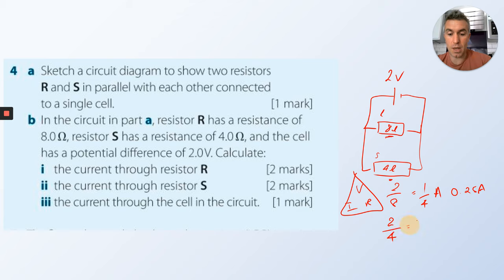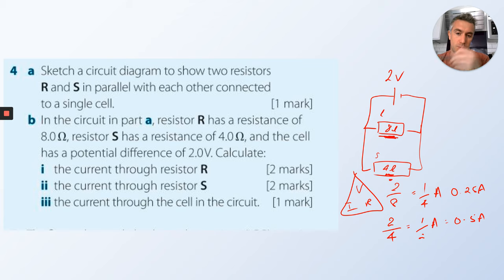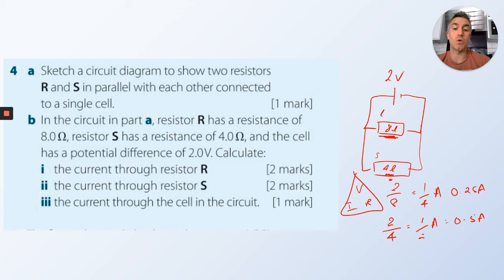For the S branch, 4 ohms: 2 divided by 4 is 0.5 amps. That makes sense — the 4 ohm resistor has more current than the 8 ohm resistor. Think of it like an obstacle: 8 ohms of resistance makes it harder for current, so everyone in that branch moves slower. The 4 ohm branch is half as difficult, so current moves faster.